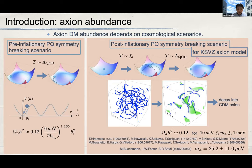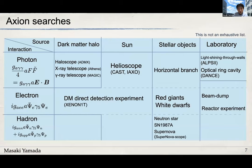Once we determine the relic abundance of axions, we can determine the well-motivated parameter space for the QCD axions — around a micro-electron-volt or 25 micro-electron-volt. We should then think about how to detect QCD axions by experiments. The axion has couplings to photons and fermions in the standard model sector via certain operators, and we can search for QCD axions using these interactions. Depending on the source of the axions, we can categorize axion search experiments accordingly — since the axion can be dark matter, we can search for dark matter axions by various experiments and observations.